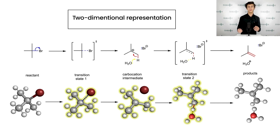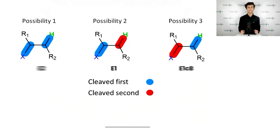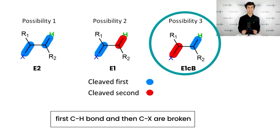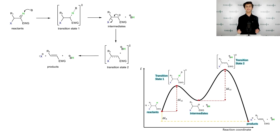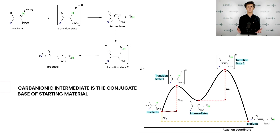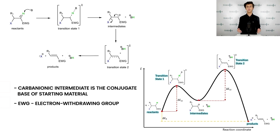We have discussed two different timings of Cx and Cy bond breaking, so there is only one possibility left. The last option is very similar to the previous mechanism; however, it differs in the sequence of bond breakage. First, the C-H bond is broken, which leads to the formation of a carbanion intermediate. The second step is the Cx bond break, which leads to the formation of a pi bond and an ion. Such a reaction is called E1Cb — elimination from the conjugate base — because X is eliminated from the carbanion intermediate, which is the conjugate base of starting material. The abbreviation EWG means electron withdrawing group, which will be discussed later.